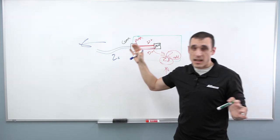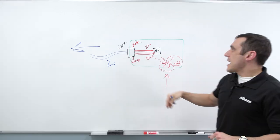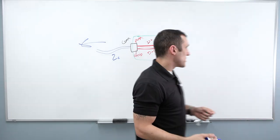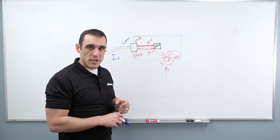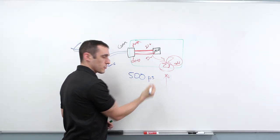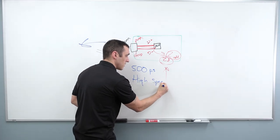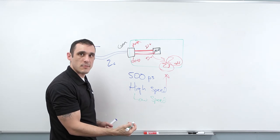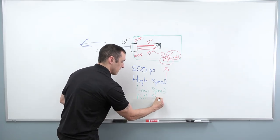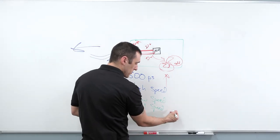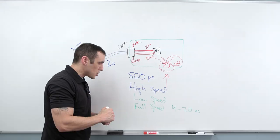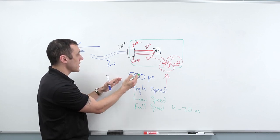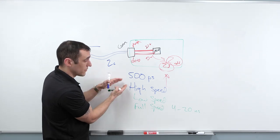Your job as the PCB designer is to design to the odd or differential mode specification, as well as to include some pull-up or pull-down resistors depending on the generation of USB 2 you're working with. With a 500 picosecond rise time, we're dealing with the high-speed specification. There's also low speed — the lowest rise time and data rate — and full speed, with a mid-range rise time and data rate. For full speed, the rise time specification is 4 to 20 nanoseconds, so it's a lot easier to meet the impedance constraints compared to high speed.